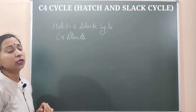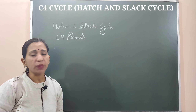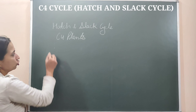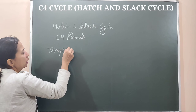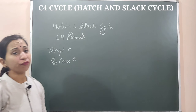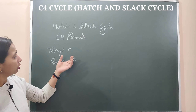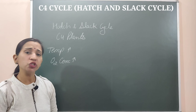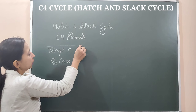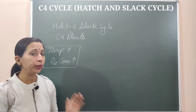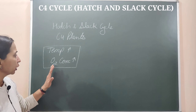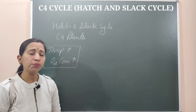C4 plants show carbon dioxide fixation by the C4 cycle. These plants grow in tropical regions where temperature is high and oxygen concentration is also high. Plants growing in these environmental conditions face conditions where photorespiration could occur, but they have adapted themselves to avoid it and still fix CO2 to form glucose.